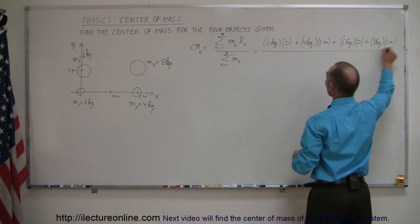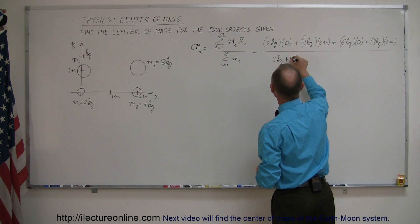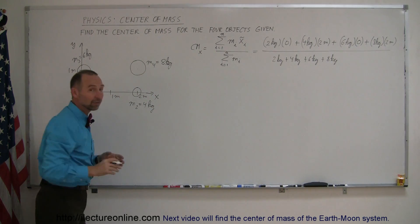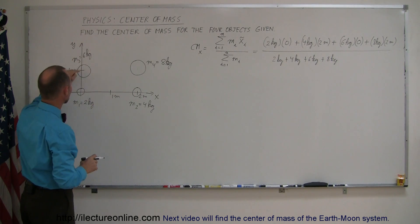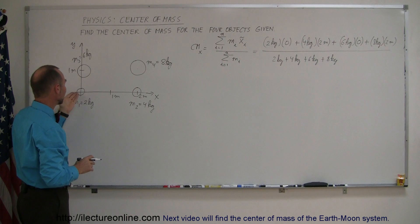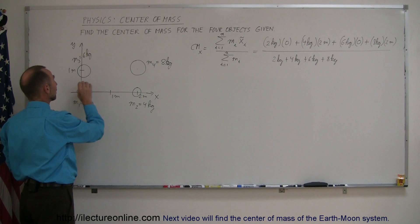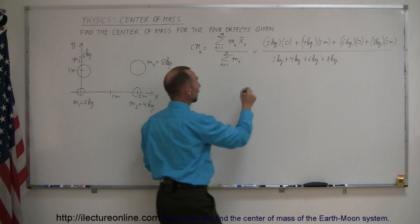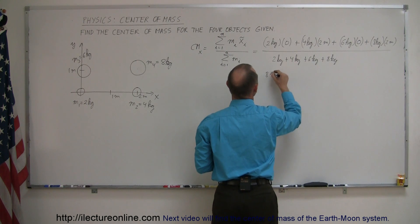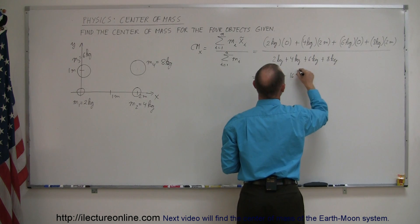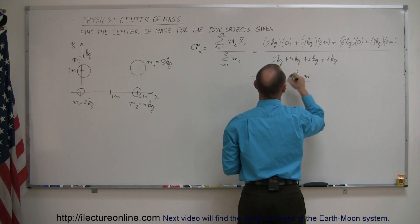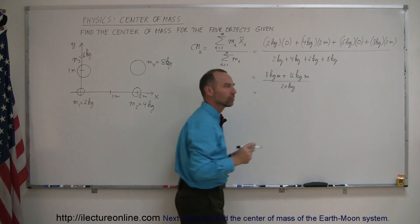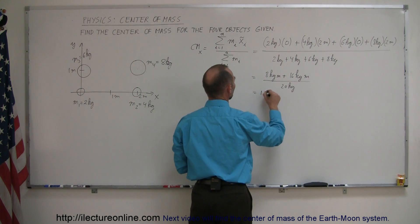We divide that by the sum of all the masses: 2 kilograms plus 4 kilograms plus 6 kilograms plus 8 kilograms. That gives us 0 plus 8 kilogram-meters plus 0 plus 16 kilogram-meters, divided by 20 kilograms. Notice that the kilograms cancel out, and we're left with 24 divided by 20, which is 1.2 meters.